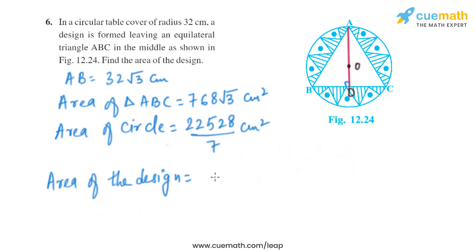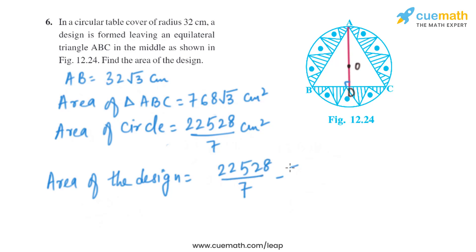Now let's find the area of the design, which is the difference between the area of the circle and the area of the triangle: (22528/7 − 768√3) square centimeters. That is the area of the design.